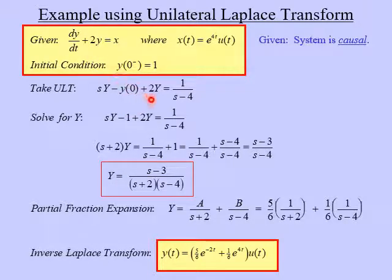The second term, 2y, just becomes two times the transform of y. And then on the right side, x, we're going to take the transform of x, which is given by this function here. And so if we remember from our transform pairs, an exponential function has a transform of 1 over s plus a. And in this case, a is negative 4. Remember, there was a minus sign in front of the a. So we have 1 over s minus 4.